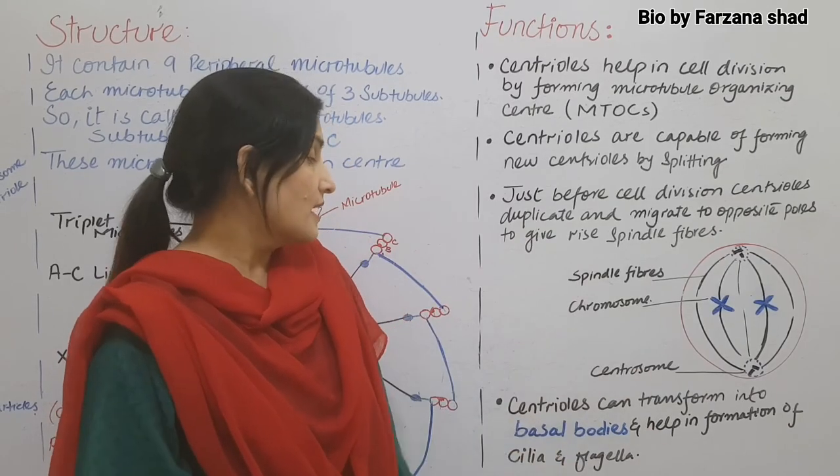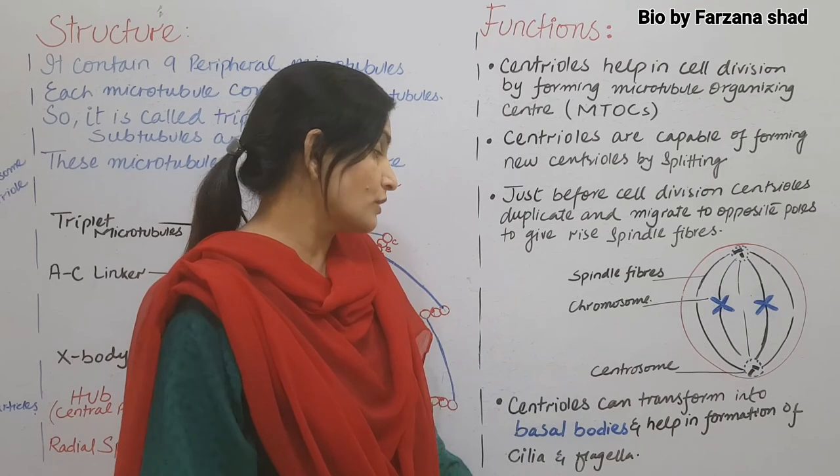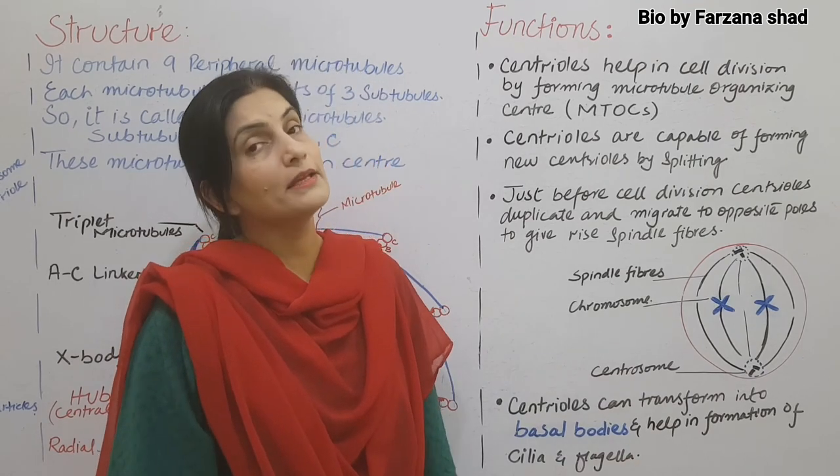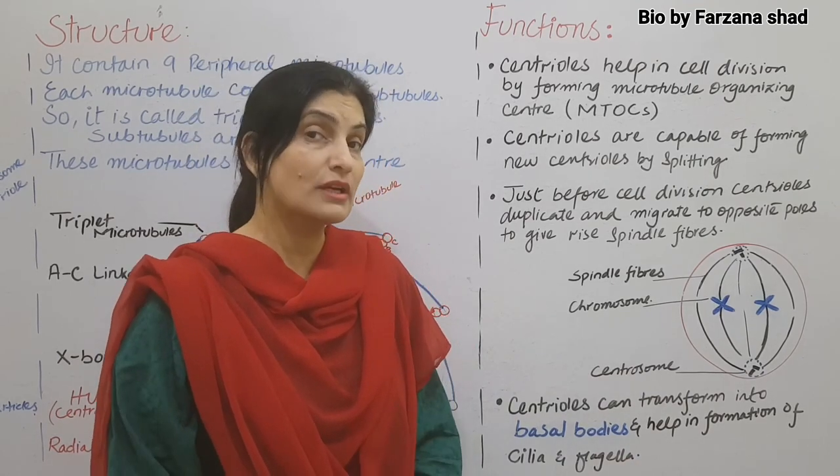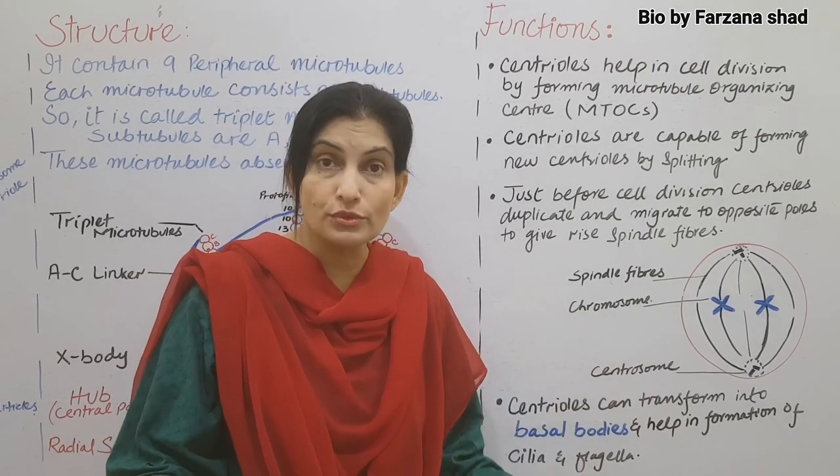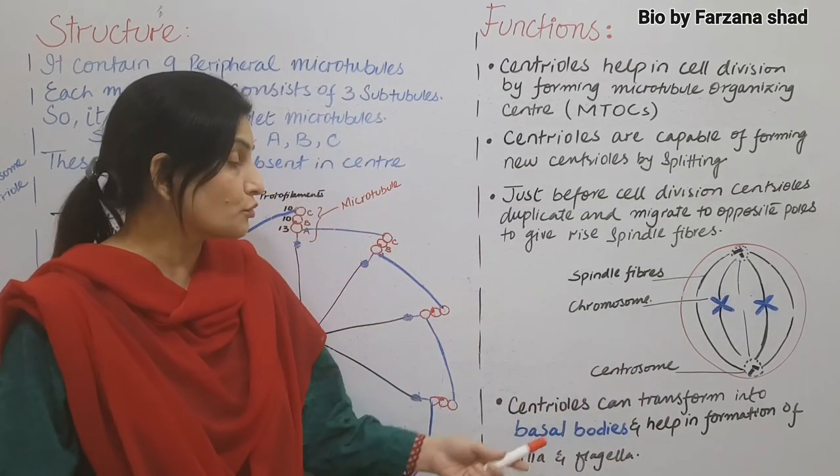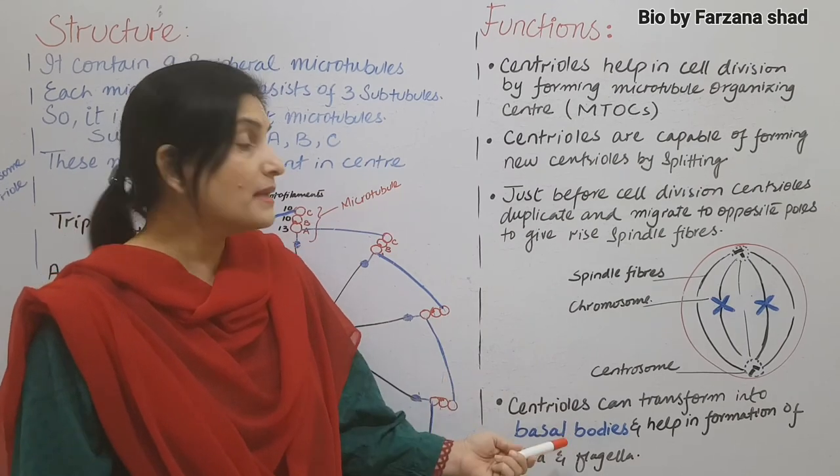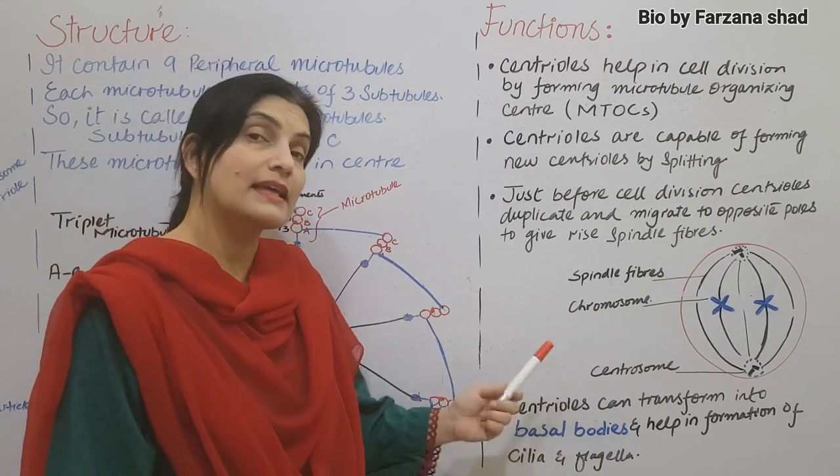And the last thing is centrioles can transform into the basal bodies and help in the formation of cilia and flagella. In different parts of our body, ciliated cells are present. Their formation occurs through these basal bodies, and those basal bodies are made with the help of centrioles.